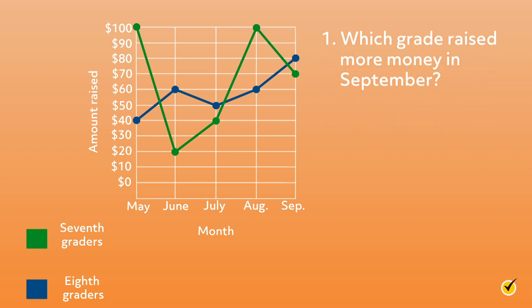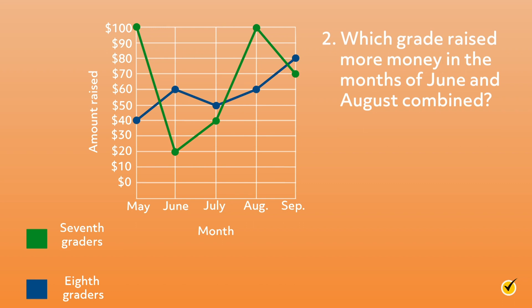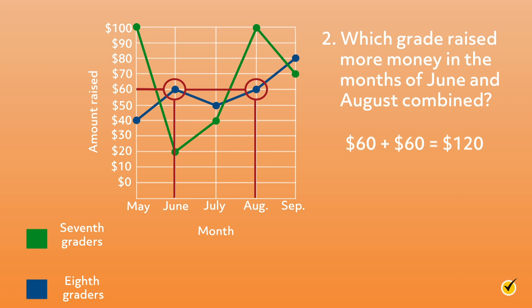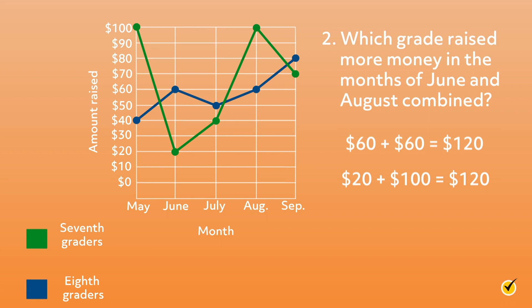Which grade raised more money in September? 8th grade students raised more money than 7th grade students in September. Remember that blue data points represent 8th grade students and green data points represent 7th grade students. Looking at the markers for September, we see that the blue marker is higher than the green marker, so 8th grade students raised more money in September. Which grade raised more money in the months of June and August combined? The 8th grade students, shown in blue, raised $60 in June and $60 in August — 60 plus 60 equals 120, so the 8th grade students raised $120 in June and August. The 7th grade students, shown in green, raised $20 in June and $100 in August — 20 plus 100 equals 120, so the 7th grade students also raised $120 in June and August. Both grades raised the same amount of money in the months of June and August combined.